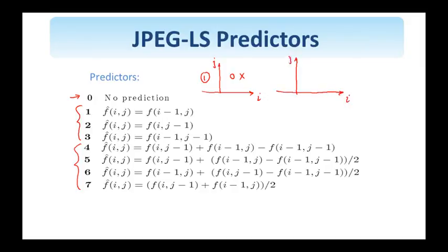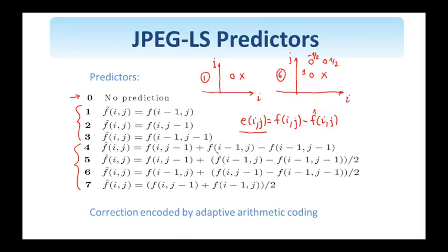If we look at predictor number 6, then the pixel value at this location is equal to the pixel value on the left with weight 1, the one above with weight 1/2, and the one diagonally above with weight minus 1/2. So this is also a linear predictor, a two-dimensional one, that uses the three neighbors as shown here. So the prediction error clearly is the actual value of the image at location ij minus the predicted value at location ij. So for lossless compression, this error is encoded losslessly, and for JPEG-LS, it's encoded using adaptive arithmetic coding.